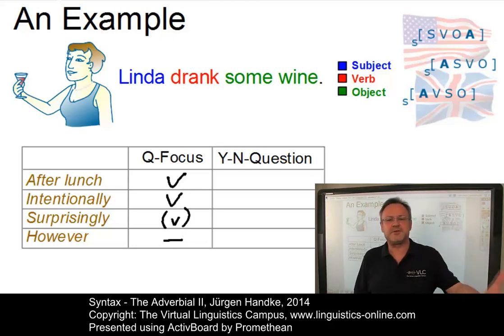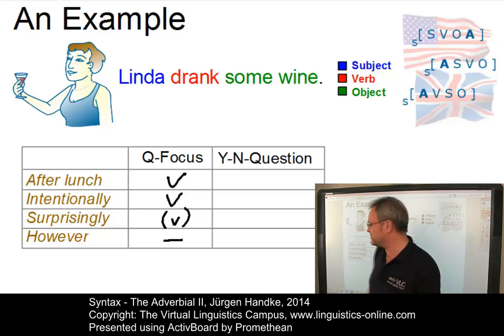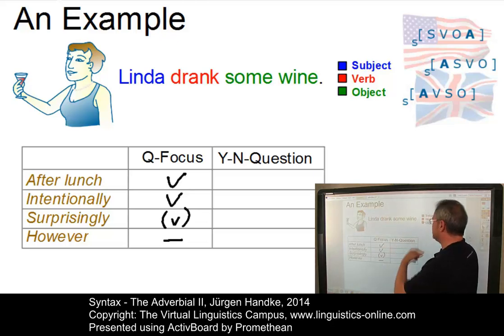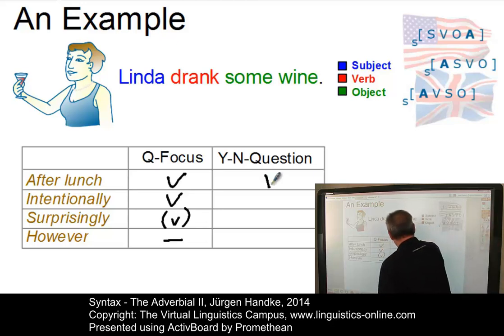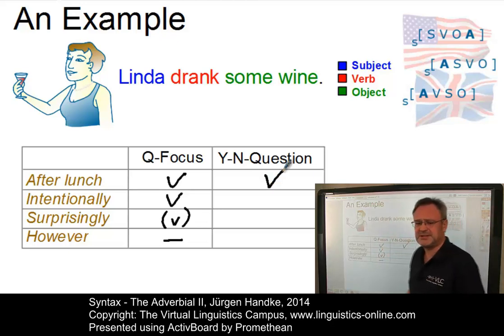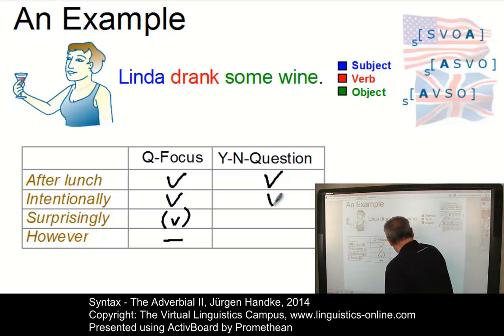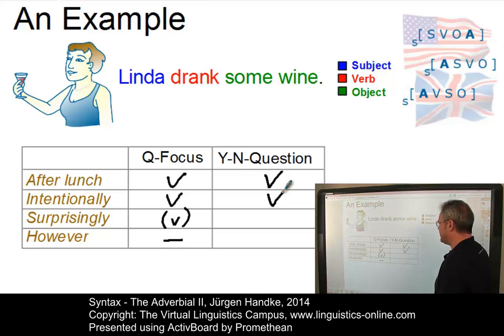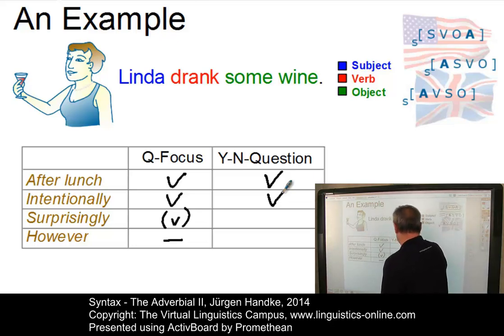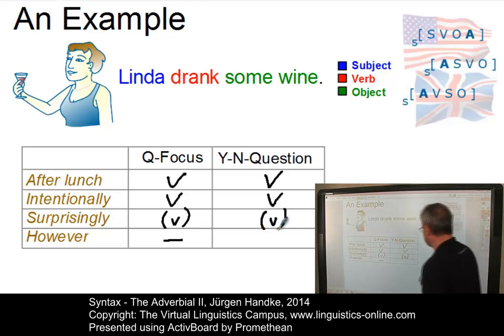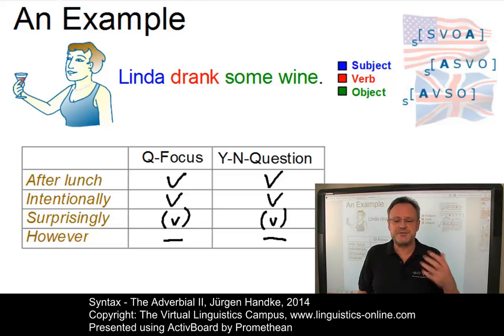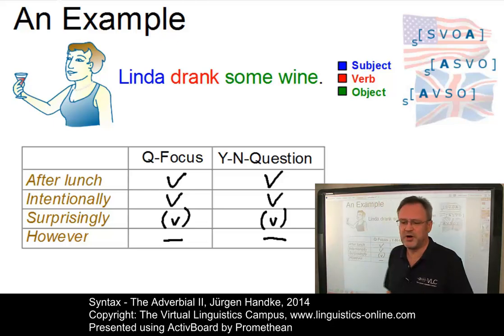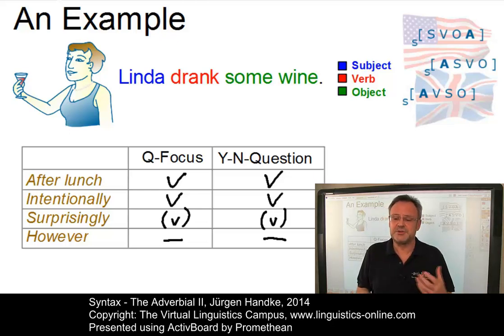In the second criterion — can the adverbial be the answer to a yes/no question? Did Linda drink some wine? Yes, after lunch. Did Linda drink some wine? Yes, intentionally. Did Linda drink some wine? Yes, surprisingly — that's again a little bit strange. And did Linda drink some wine, however? This is of course ungrammatical. Thus, we can observe a different grammatical behaviour of our four adverbials, and this leads us to the definition of several functional subtypes of adverbials.